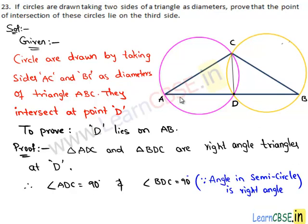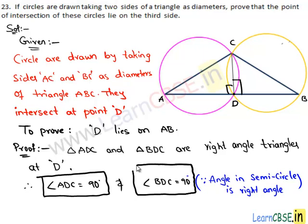We have two triangles, ADC and BDC, both right-angled at D. Therefore, angle ADC is a right angle and angle BDC is also a right angle, because the angle in a semicircle is a right angle. By adding these two, we get angle ADC plus angle BDC.